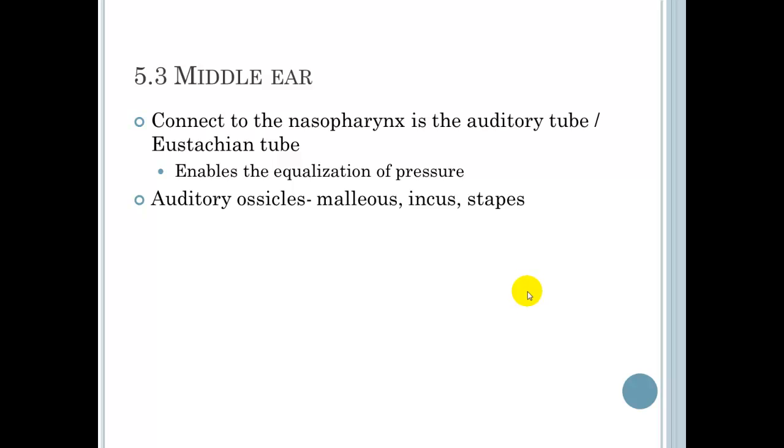They also have the auditory ossicles in there, which are called the malleus, the incus, and the stapes.